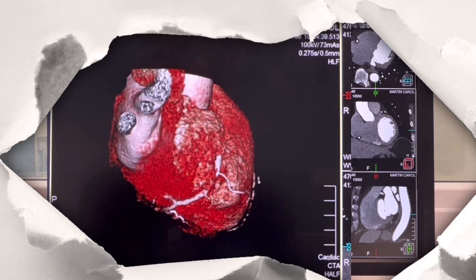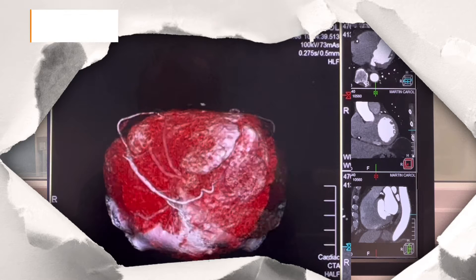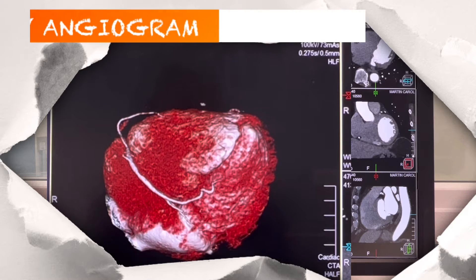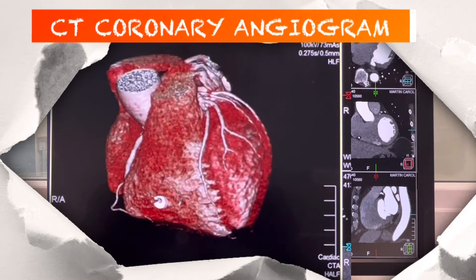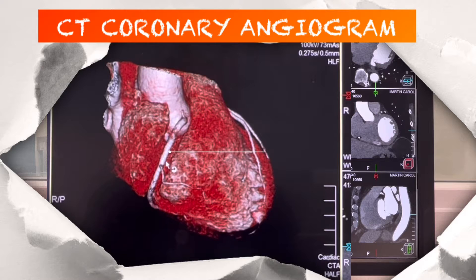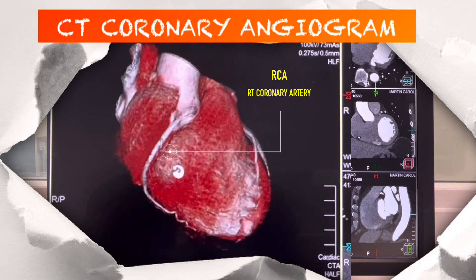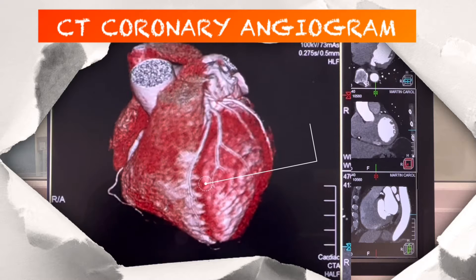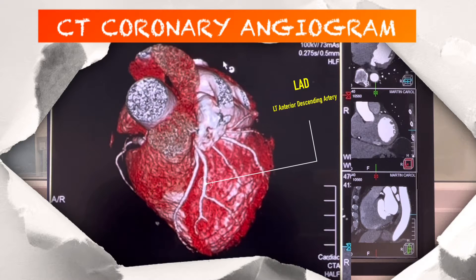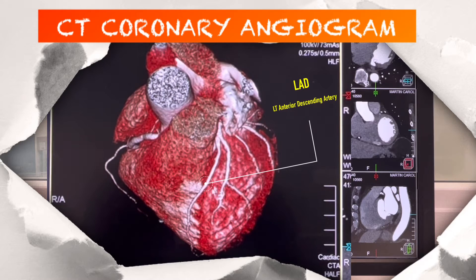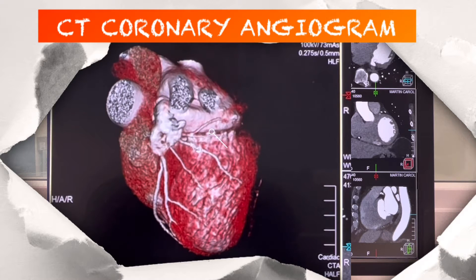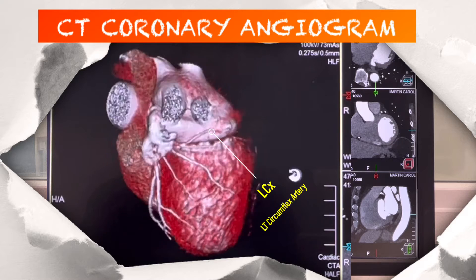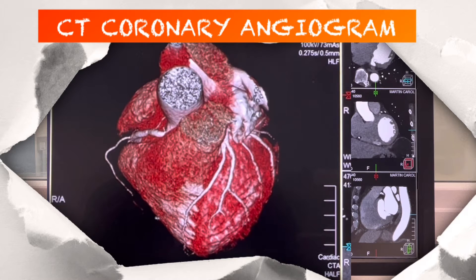Hello guys, in this video I'm going to share with you how I scan a CT coronary angiogram and come up with this fantastic image of the heart which shows the three main arteries. First would be the RCA, which is the right coronary artery. Second would be the LAD or the left anterior descending artery. Third would be the left circumflex or the LCX. Sit back and watch the entire video — hoping you will learn something. Thank you.